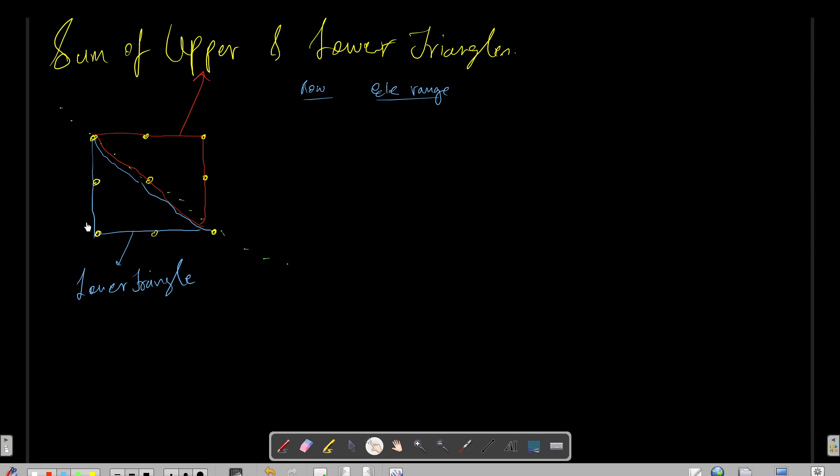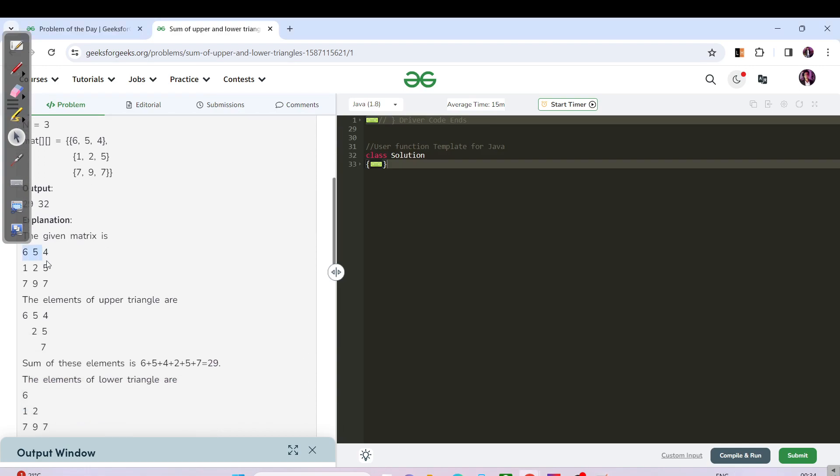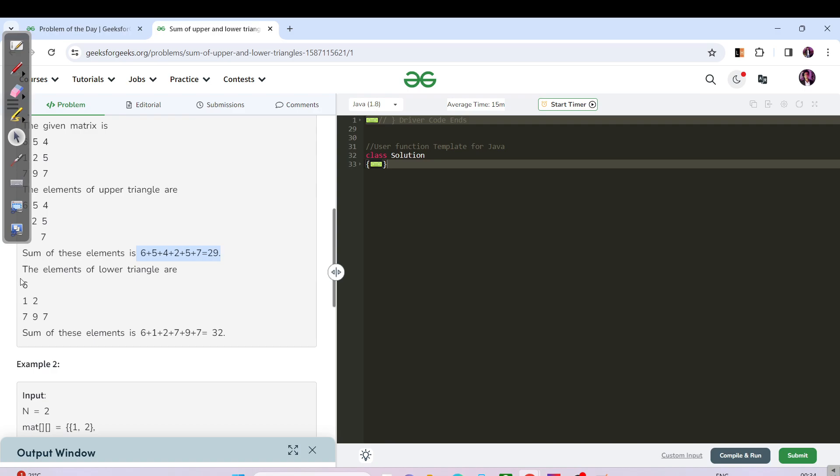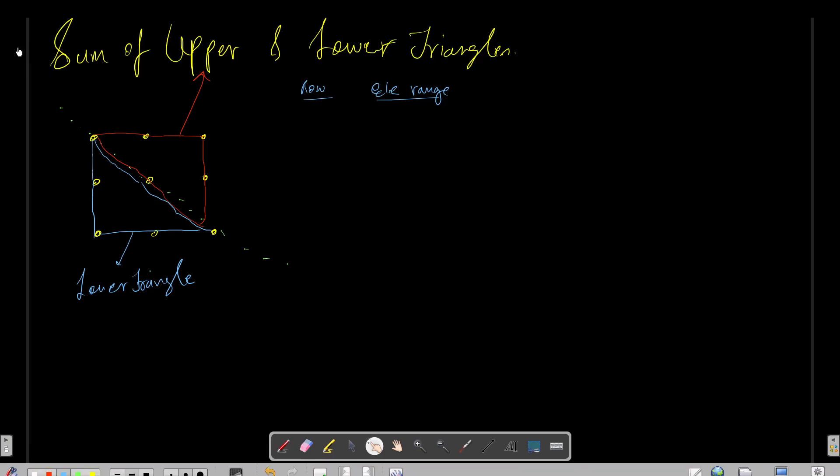For the upper triangle, you can see 3, 3, 6, 5, 4, 2, 5, and 7 are the upper triangle elements and you need to return the sum. Similarly for the lower triangle: 6, 1, 2, 7, 9, 7. The question is very easy, but if you're a beginner, you might have faced a slight delay in solving this.